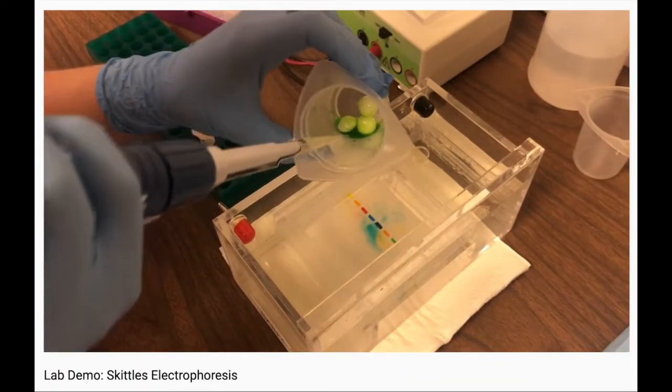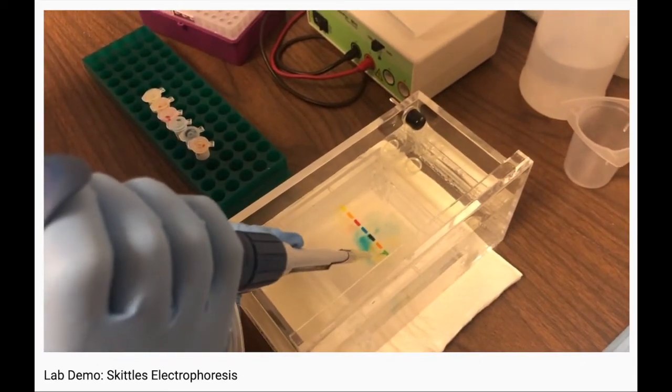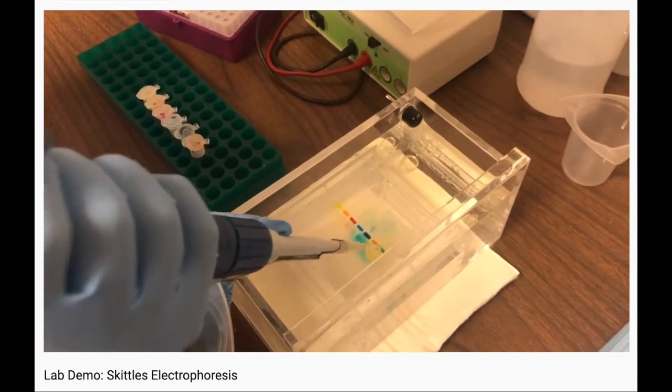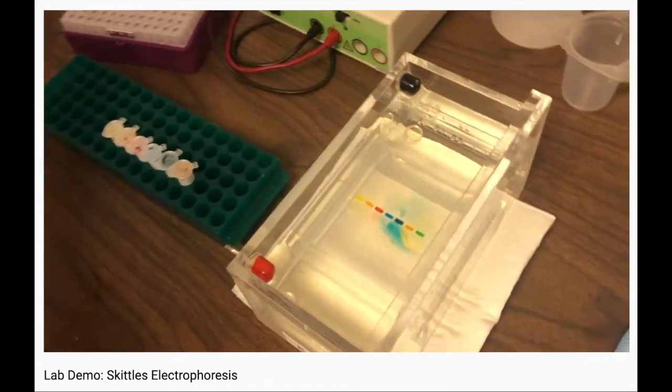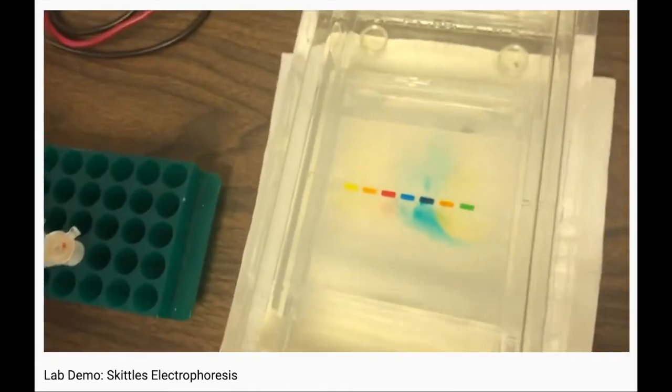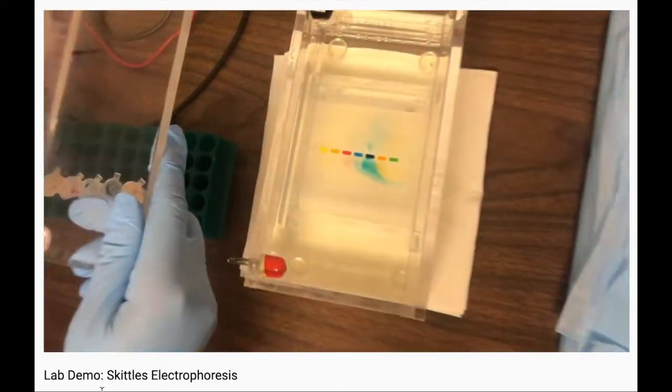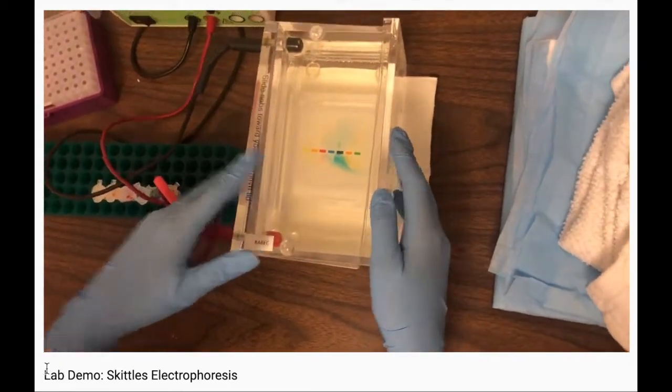So we're skipping ahead, we're adding the liquid from the outside of the green Skittle into lane 7, and as you can see, we have now loaded all 7 of our samples, and we're putting our lid on top of the electrophoresis box.